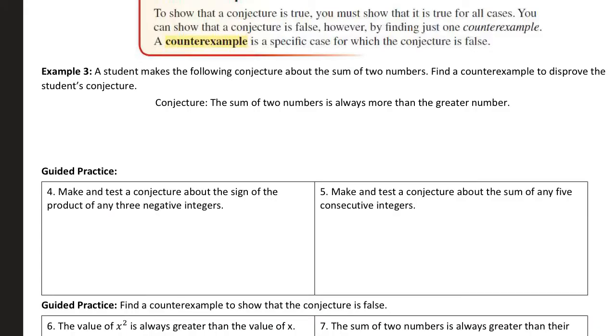So to show a conjecture is true, you have to show it's true for all cases. So that consecutive integers one would have been really hard to prove for all cases. Basically impossible if we're going to go case by case. However, if we're looking at disproving a conjecture, proving that it's false, all we need to do is find one counterexample to prove that conjecture false. So a counterexample is a specific case for which the conjecture is false.